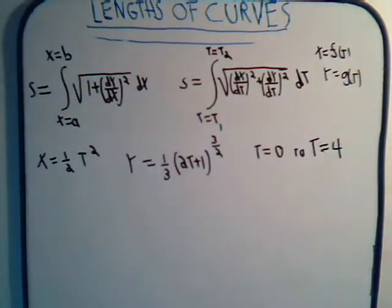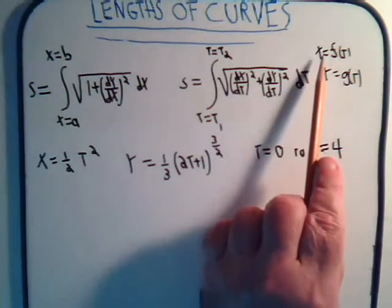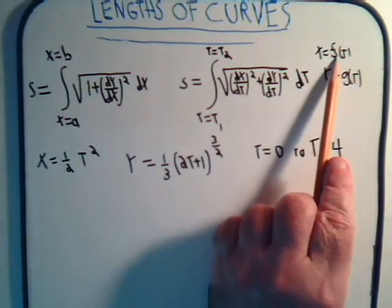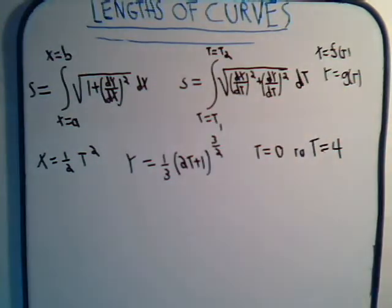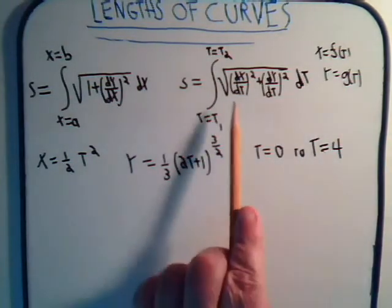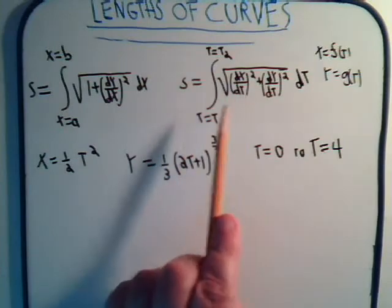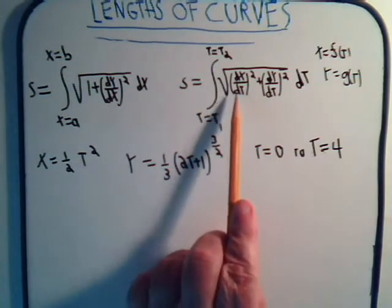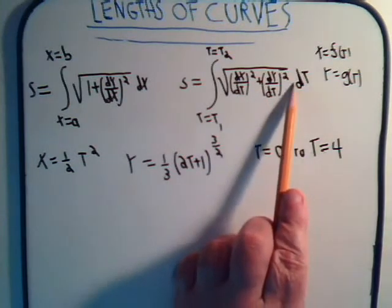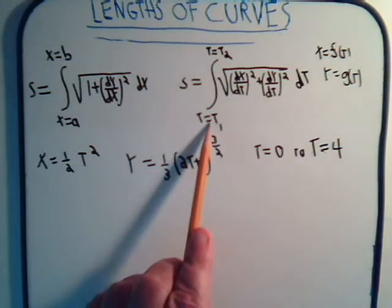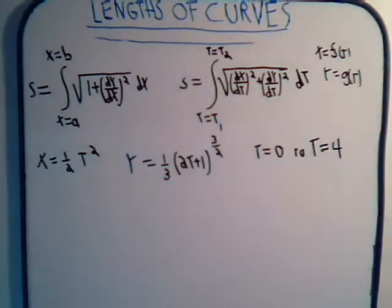Now this is when we have parametric equations where x equals some function of t and y equals a different function of t. In this case, the length of the curve becomes the square root of (dx/dt) squared plus (dy/dt) squared, integrated with respect to t going from t equals t₁ to t equals t₂.